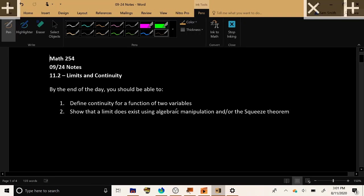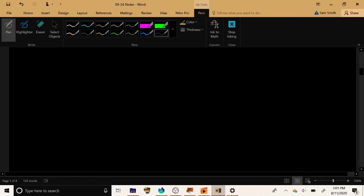So by the end of today we have two goals. One, we want to talk about what the word continuity means for a function of two variables. And after that we're going to develop a few tricks, a few things that we can do to show that a limit actually does exist. And really we're only going to have two ways that we can do that. One using a little bit of algebra manipulation, and two using good old fashioned squeeze theorem from Calc 1. So let's go ahead and get started.